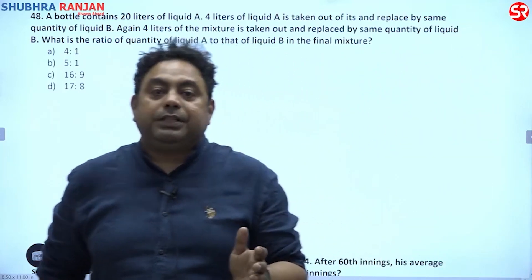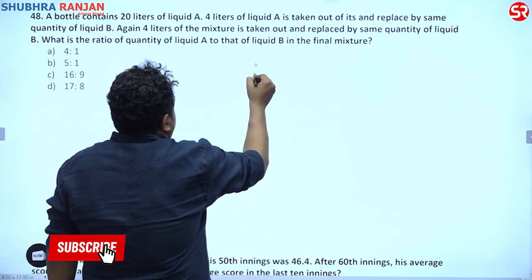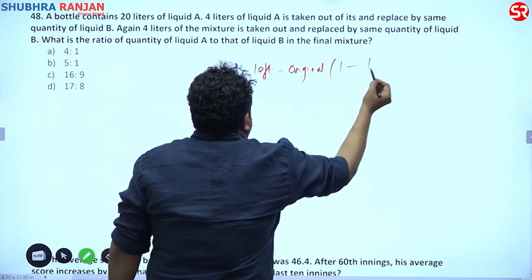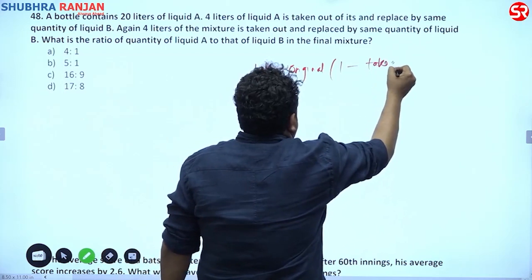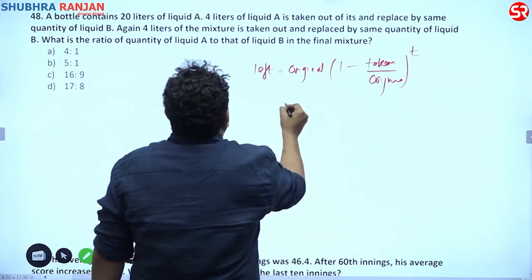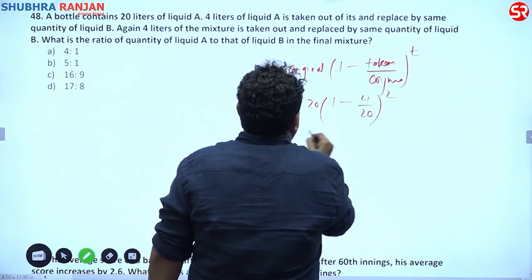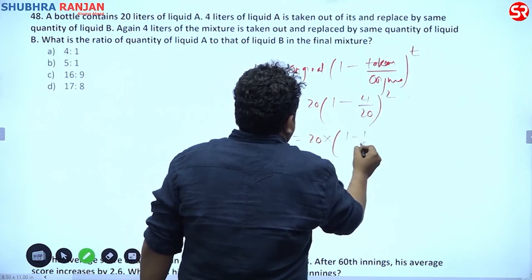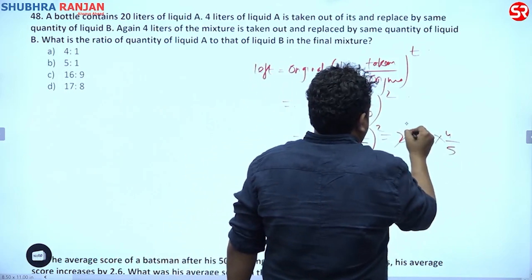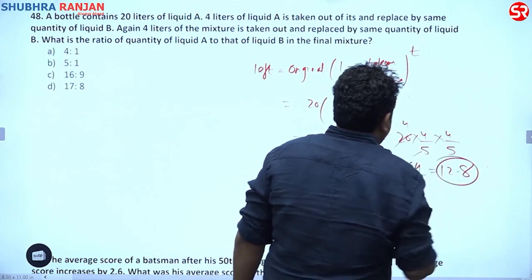Use the alligation and mixtures formula: quantity left equals original times (1 − quantity taken out / original) raised to the power of number of times. So: 20 × (1 − 4/20)² = 20 × (4/5)² = 20 × (4/5) × (4/5) = 20 × 16/25 = 12.8.